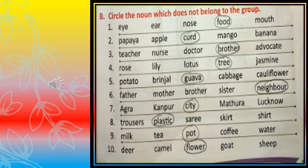Rose, lily, lotus, tree and jasmine — apart from tree, all are flowers, so tree is different and we will circle it. Potato, brinjal, guava, cabbage and cauliflower — all are vegetables apart from guava, because guava is a fruit, so we will circle it. Father, mother, brother, sister, neighbor — father, mother, brother and sister are relatives, but neighbor is not a relative, so we will circle neighbor. Agra, Kanpur, city, Mathura, Lucknow — all four are names of cities, but city is not a name of a city, so we will circle city. Trousers, plastic, sarees, skirt and shirt — all are names of dresses or clothes, but plastic is a material, so we will circle it.